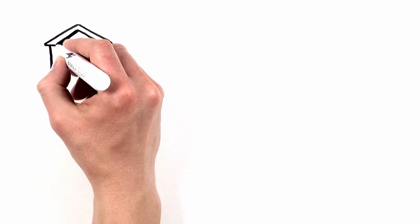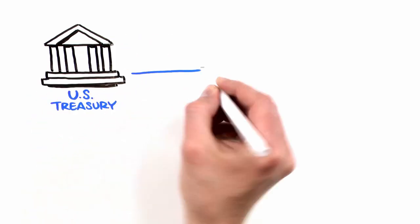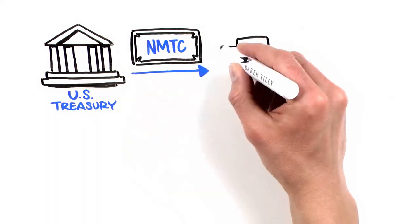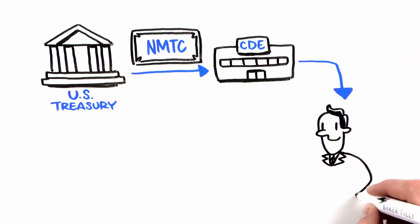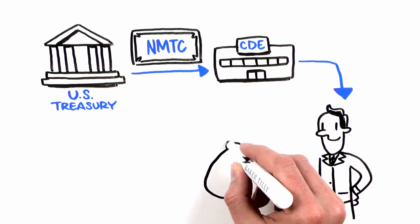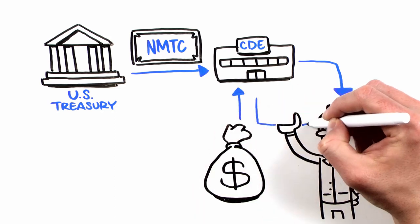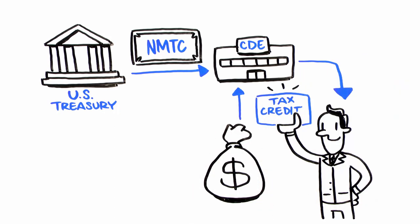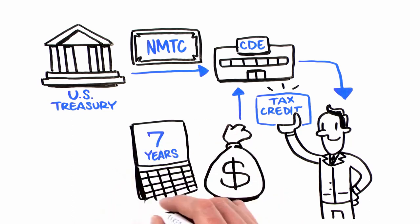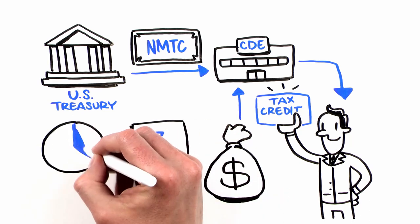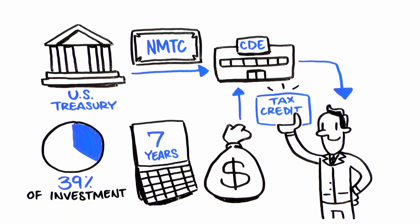Through a competitive application process, CDEs are awarded an allocation of Federal New Markets Tax Credits. Once awarded, CDEs identify equity investors that provide capital to the CDEs in exchange for tax credits. Investors are provided Federal Tax Credits, taken over a seven-year compliance period, equal to 39% of the amount of the investment made in the CDE.